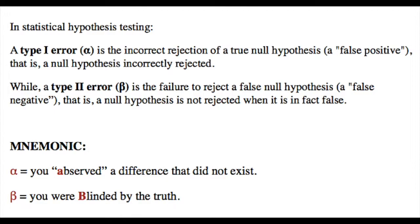While a Type II error (beta) is the failure to reject a false null hypothesis - that is, a null hypothesis is not rejected when it is in fact false.